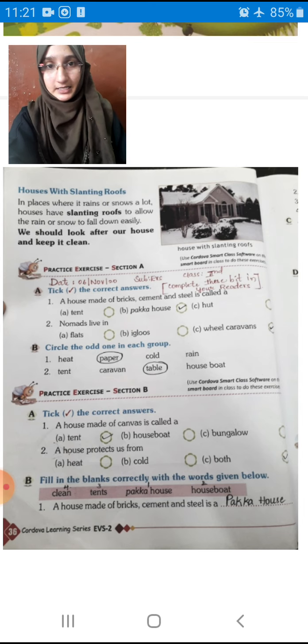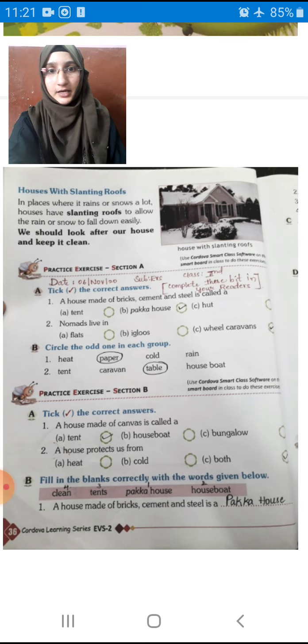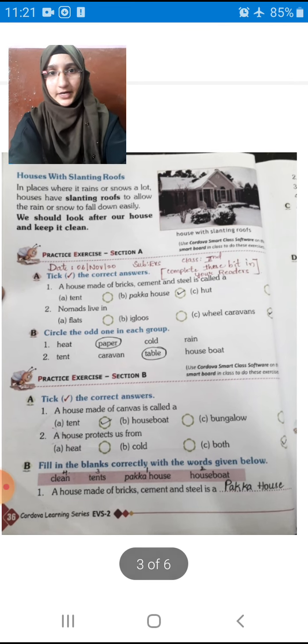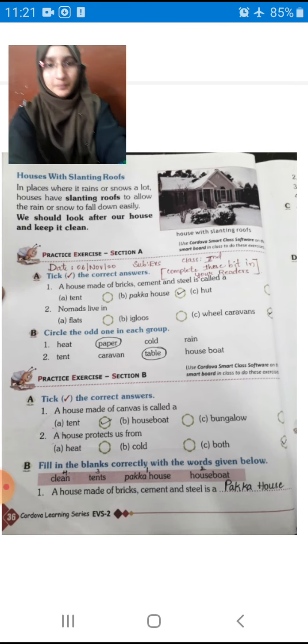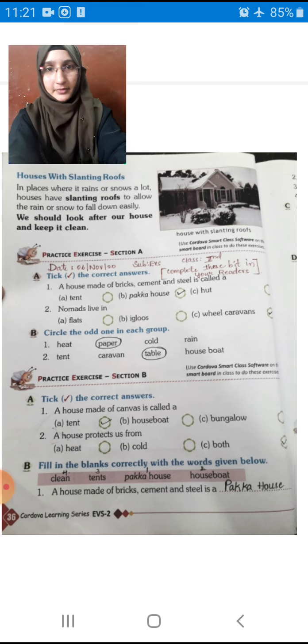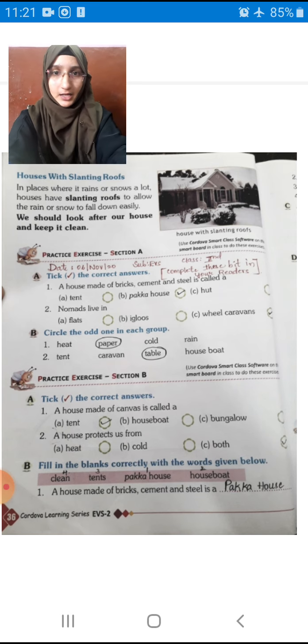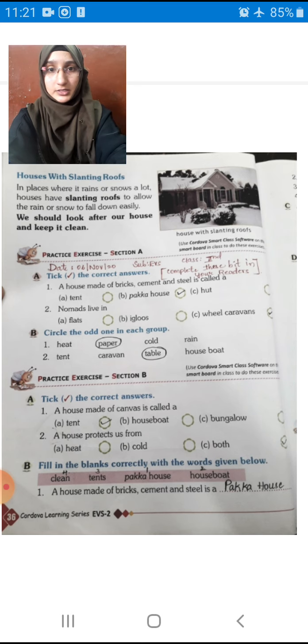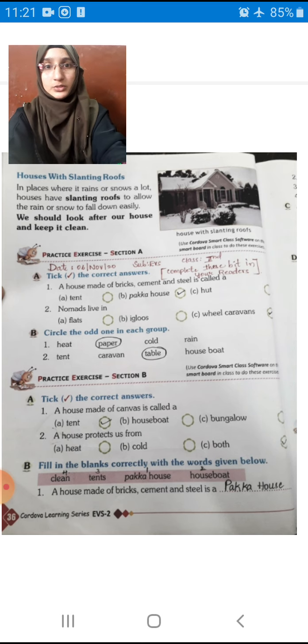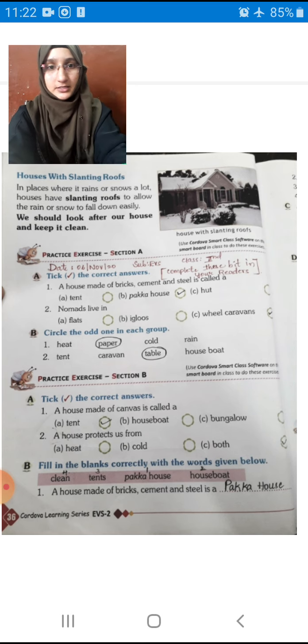So children, in our last class we have finished our lesson, Houses We Live In. Do you remember that lesson? Yes, you remember that lesson. What we have learned in that? We have learned different kinds of houses like Kaccha house and Pakka house. As well as we have seen some different kinds of houses made according to the situations and the climatic conditions. We have slanting roofs, we have igloos, and we have caravan, tent, etc.